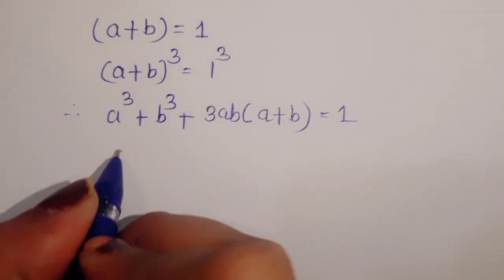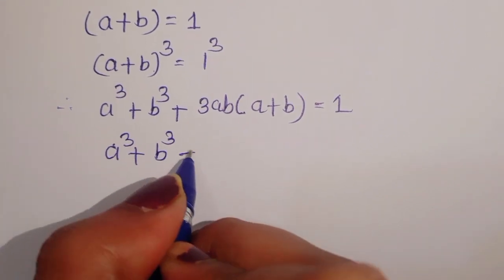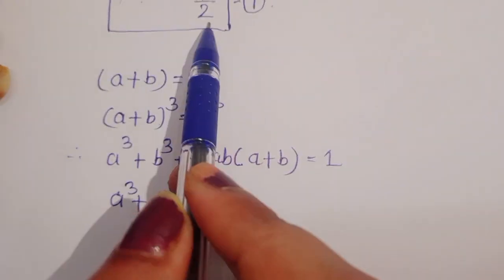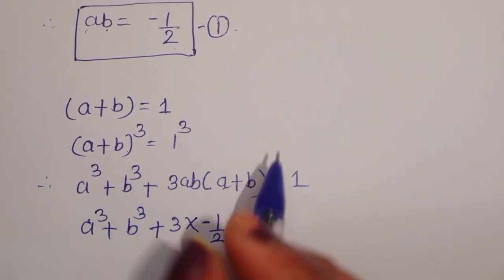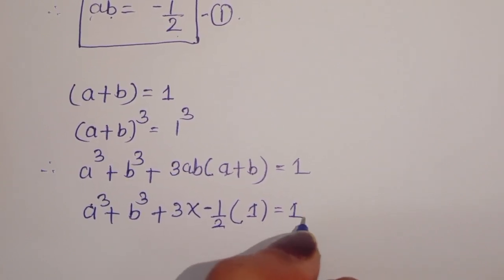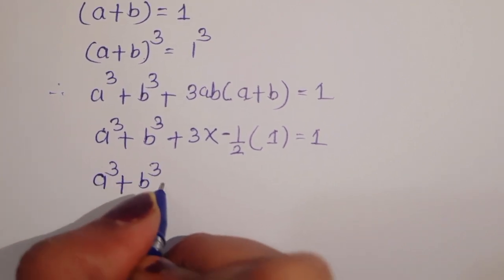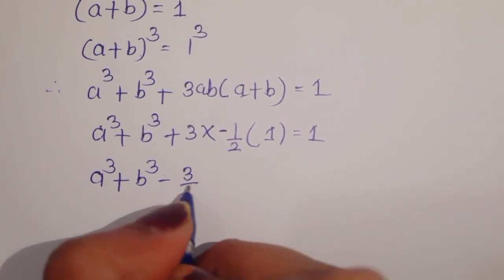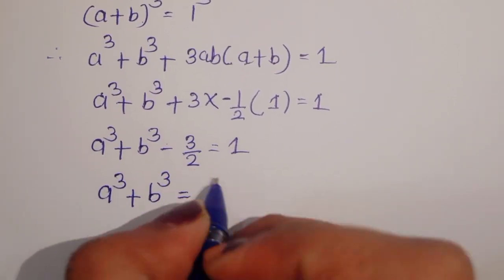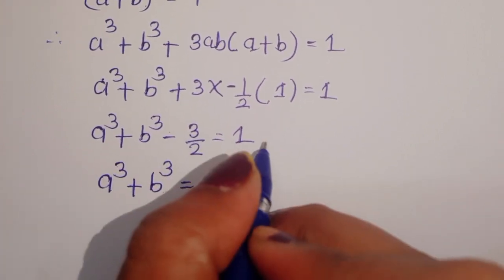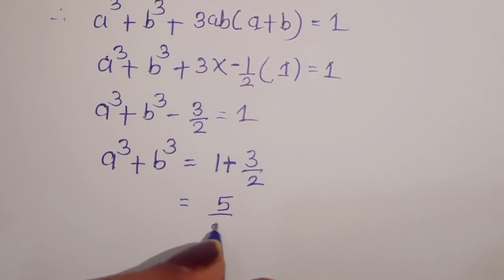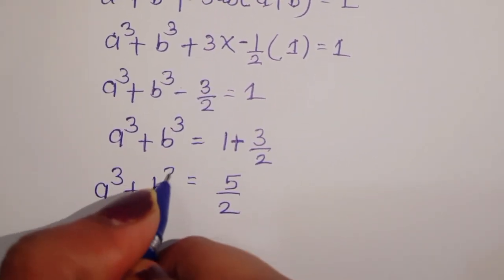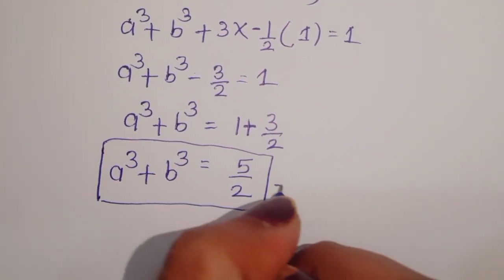We get a cube plus b cube plus 3 into ab (which is minus 1 upon 2) into a plus b (which is 1) is equal to 1. So a cube plus b cube minus 3 upon 2 equals 1, therefore a cube plus b cube equals 1 plus 3 upon 2 equals 5 upon 2. This is equation 2.